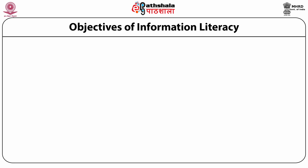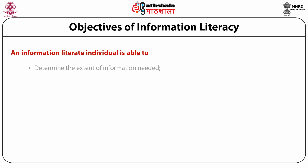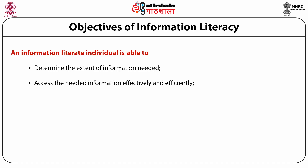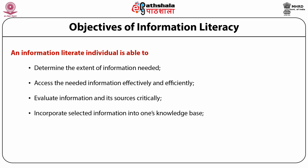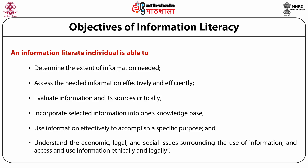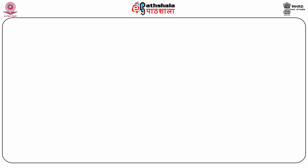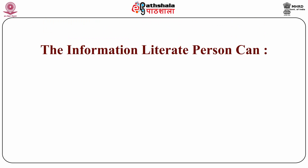Now we see who is an information literate person. An information literate individual is able to determine the extent of information needed, access the needed information effectively and efficiently. He or she is able to evaluate information and its sources critically, incorporate selected information into one's knowledge base. He or she uses information effectively to accomplish a specific purpose, and is able to understand the economic, legal, and social issues surrounding the use of information, and access and use information ethically and legally. This is a visual show of the information literate person.